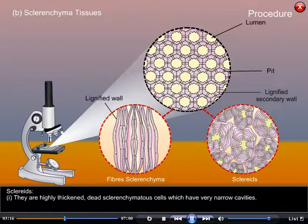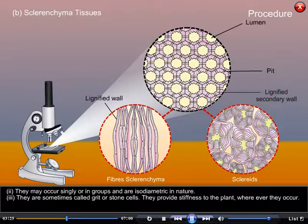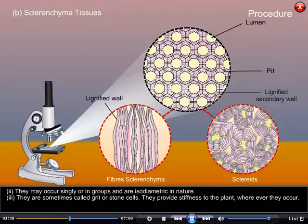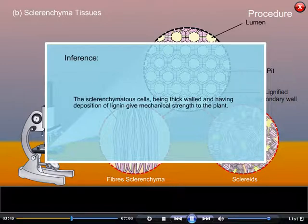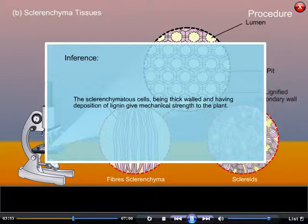Sclerides: They are highly thickened, dead sclerenchyma cells which have very narrow cavities. They may occur singly or in groups and are isodiametric in nature. They are sometimes called grit or stone cells and provide stiffness to the plant wherever they occur. Inference: The sclerenchyma cells, being thick-walled with lignin deposition, give mechanical strength to the plant.